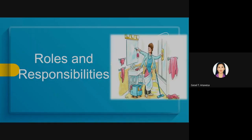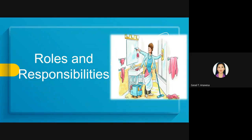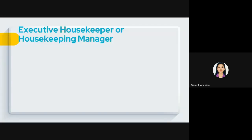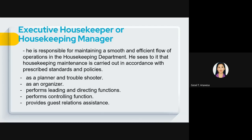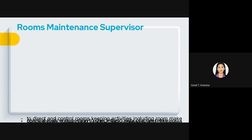Now let us discuss the roles and responsibilities of housekeeping department personnel. First, the executive housekeeper or housekeeping manager is responsible for maintaining a smooth and efficient operational flow in the housekeeping department, ensuring housekeeping maintenance is carried out according to prescribed standards. He or she acts as planner, troubleshooter, organizer, performs leading and directing functions, controlling functions, and provides guest relation assistance.